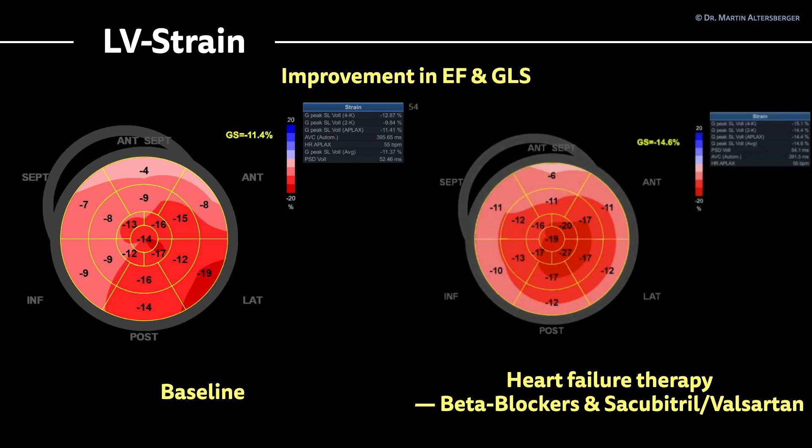The improvement occurred because we induced heart failure therapy. The main medications with some supporting data are beta-blockers, and there is also data that sacubitril-valsartan may benefit these patients. So she was placed on beta-blockers and sacubitril-valsartan, which led to improvement of global longitudinal strain across all three views — the global strain improved to approximately minus 15.